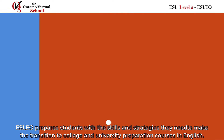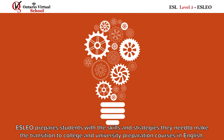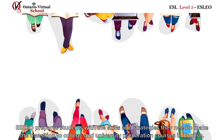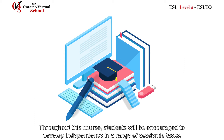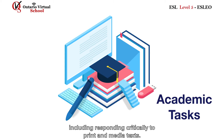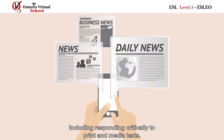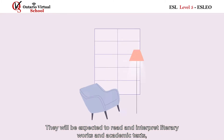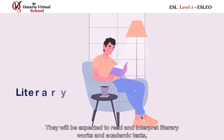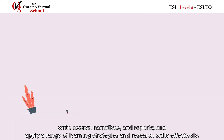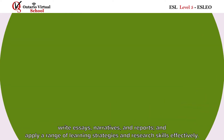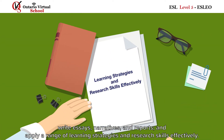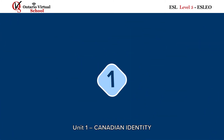ESLEO prepares students with the skills and strategies they need to make the transition to college and university preparation courses in English. Throughout this course, students will be encouraged to develop independence in a range of academic tasks, including responding critically to print and media texts. They will be expected to read and interpret literary works in academic texts, write essays, narratives, and reports, and apply a range of learning strategies and research skills effectively.